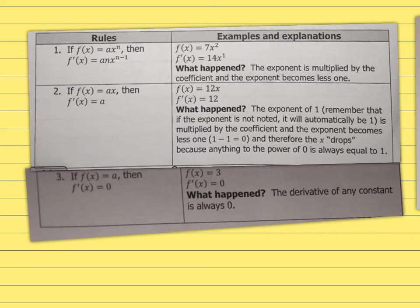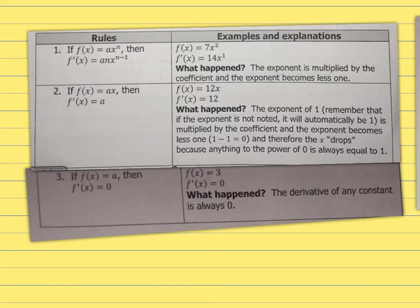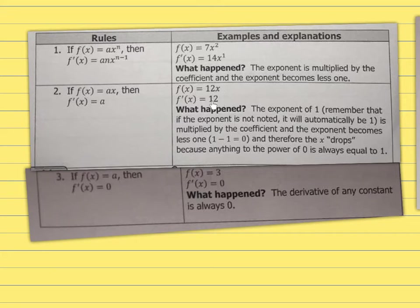Rule 2: if f(x) equals ax, then the derivative f'(x) equals a. Here's why: 12x is the same as 12 times x to the power 1. So 12 times 1 is 12, and x to the power 1 minus 1 is x to the power 0, which equals 1. Therefore 12 times 1 gives you 12.